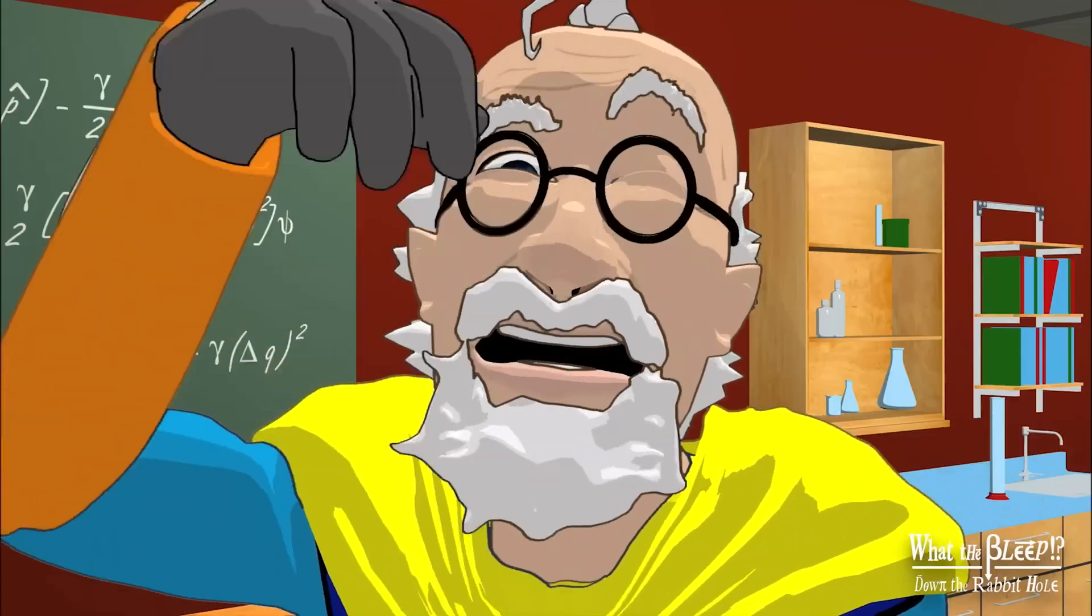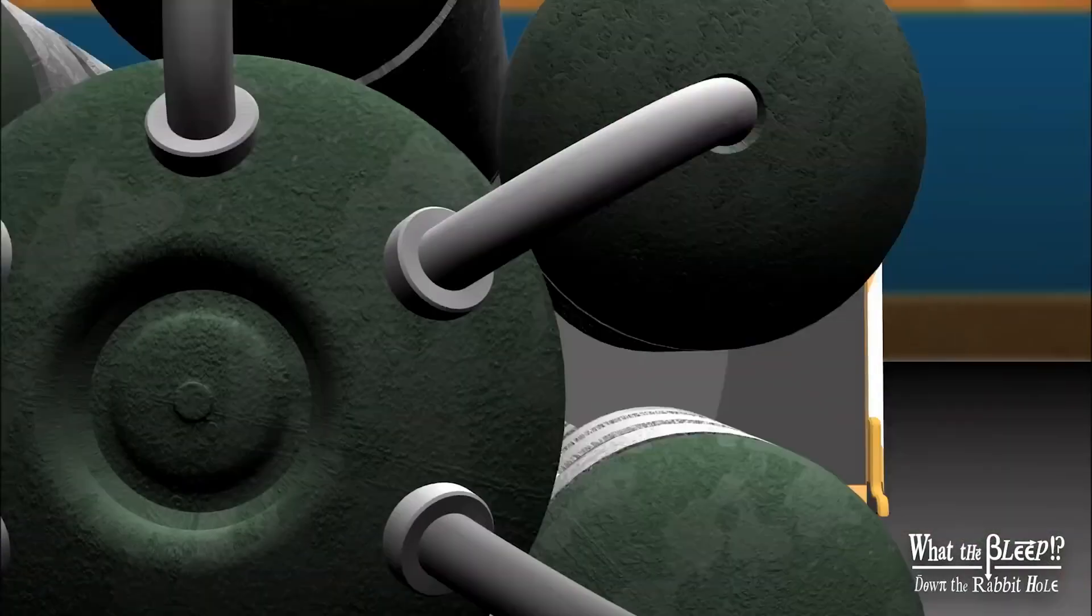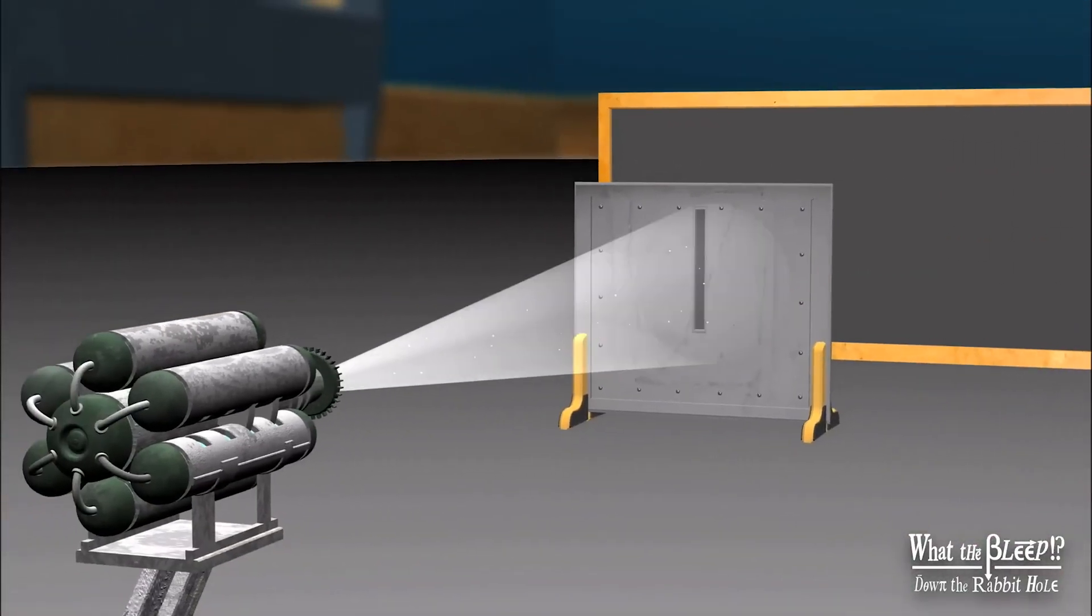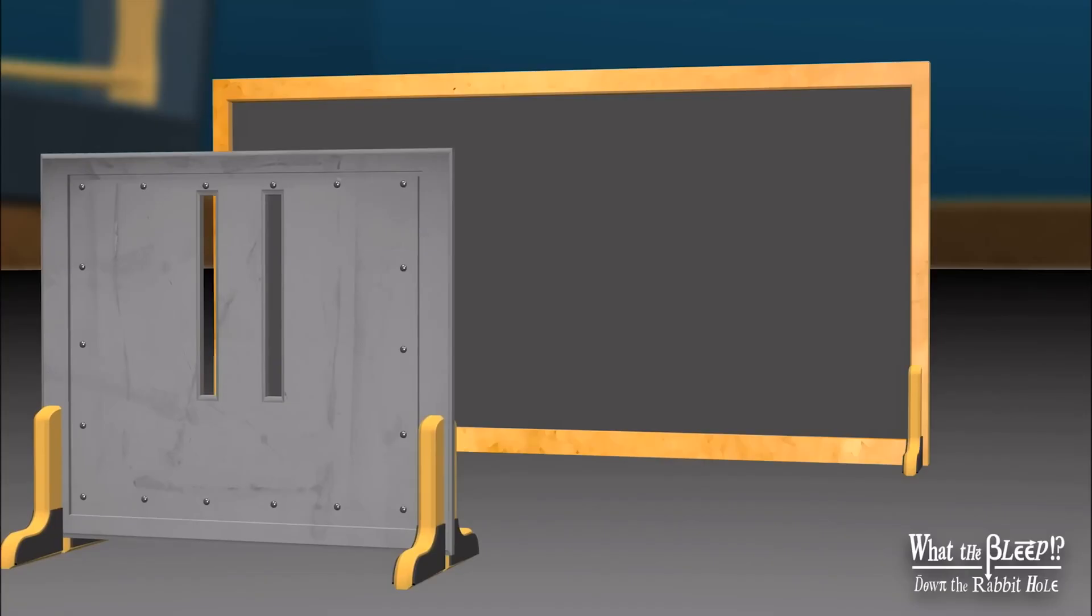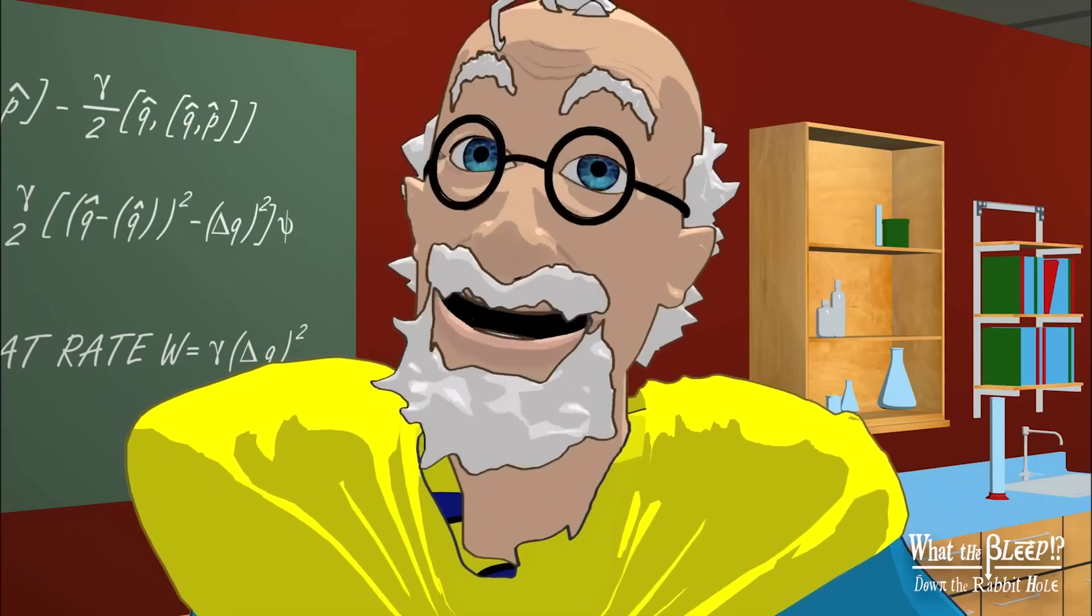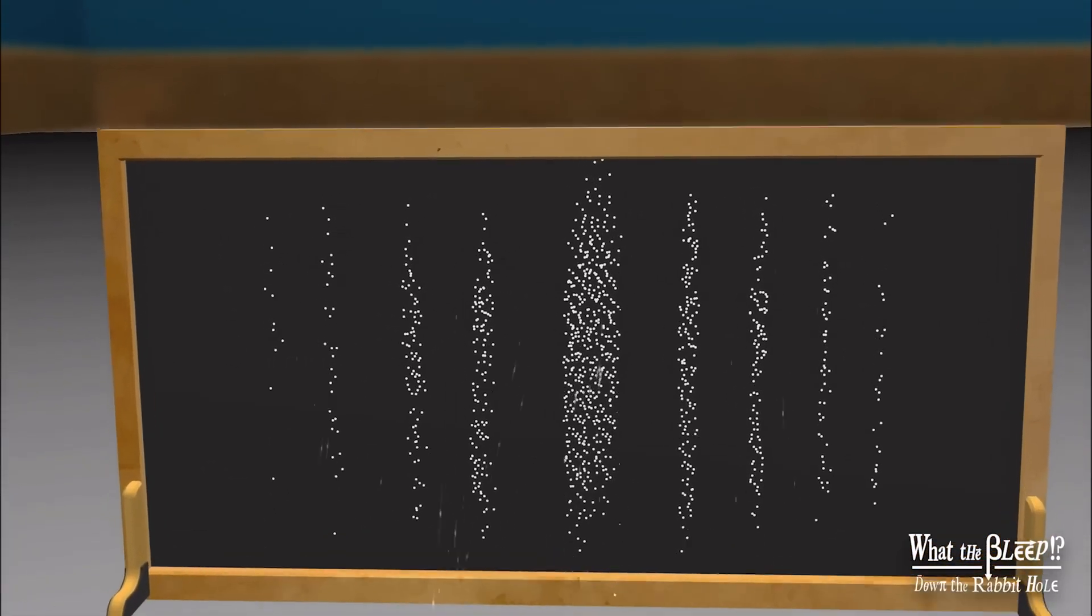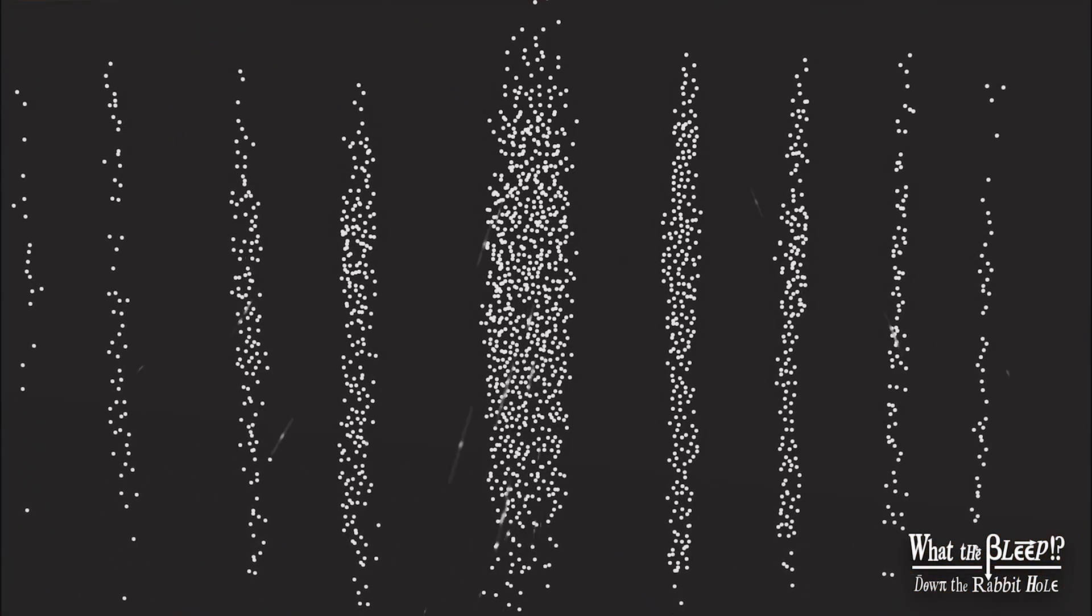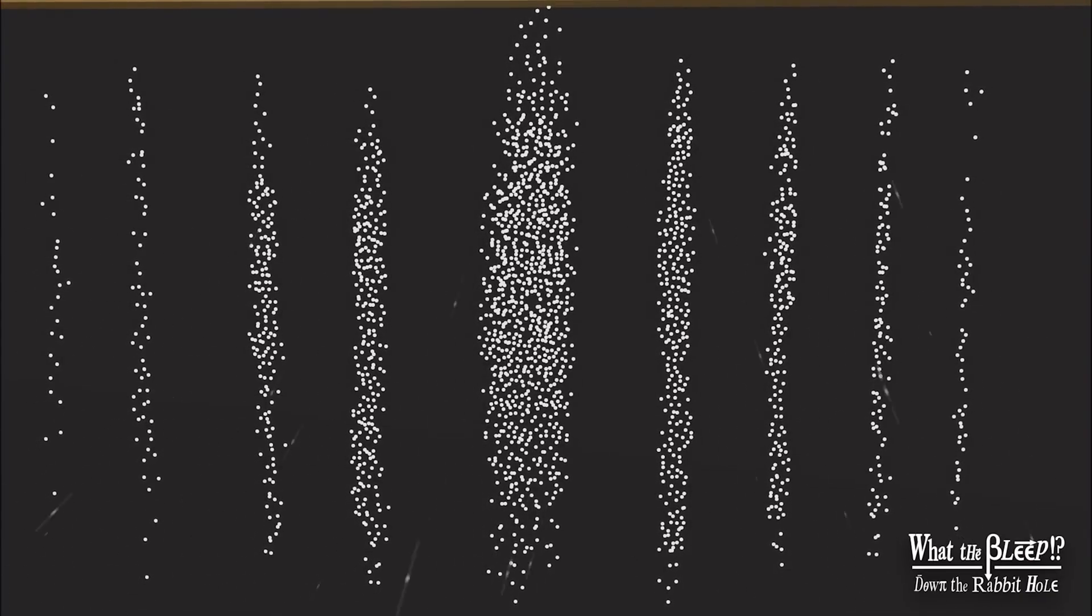Now let's go quantum. An electron is a tiny bit of matter, like a tiny marble. Let's fire a stream through one slit. It behaves just like the marble, a single band. So if we shoot these tiny bits through two slits, we should get, like the marbles, two bands. What? An interference pattern. We fired electrons, tiny bits of matter, through, but we get a pattern like waves, not like little marbles. How? How could pieces of matter create an interference pattern like a wave? It doesn't make sense.